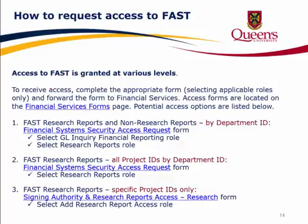How to request access to FAST? Access to FAST is granted at various levels. To receive access, complete the appropriate form selecting applicable roles only, and forward the form to Financial Services. Access forms are located on the Financial Services forms page. Option 1: to access FAST Research Reports and Non-Research Reports by Department ID, complete the Financial Systems Security Access Request form and select the GL Inquiry Financial Reporting role and the Research Reports role.